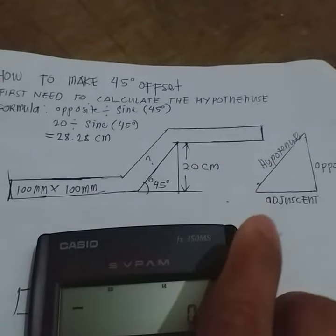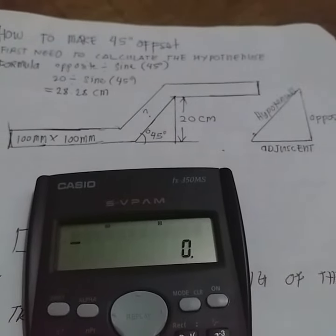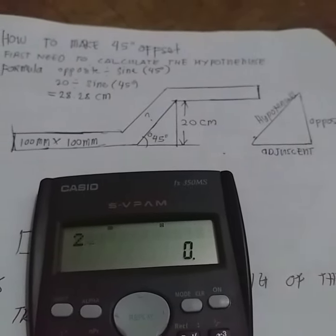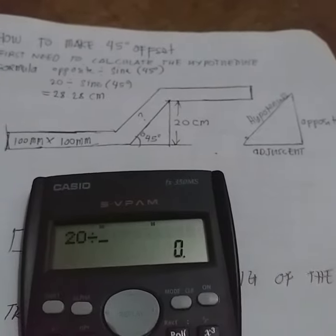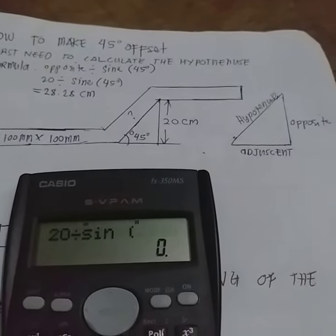So first, calculate, enter the height or the opposite, 20 divided by sine 45 degrees.